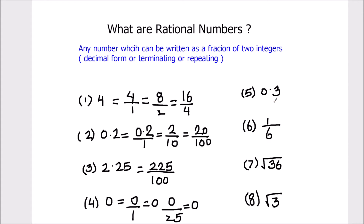Next we have 0.3̄, which is a recurring or repeating decimal — there is a bar on top of 3. It can be written as 1 over 3, or 3 over 9, so it can be represented as a fraction of two integers and is a rational number. In decimal form it is 0.333..., and the bar on top of 0.3 indicates it is a repeating decimal. So it is a rational number.